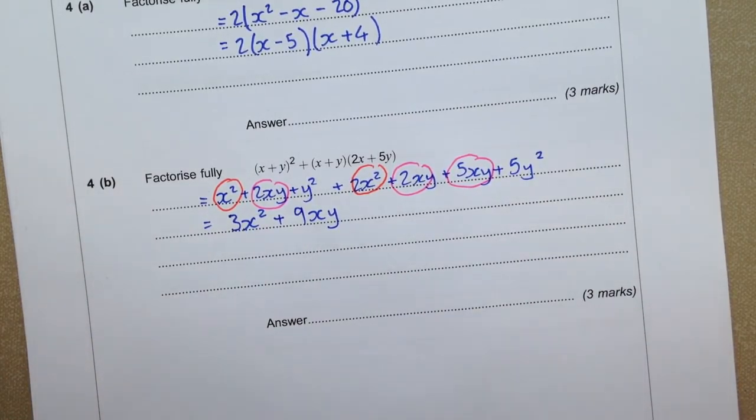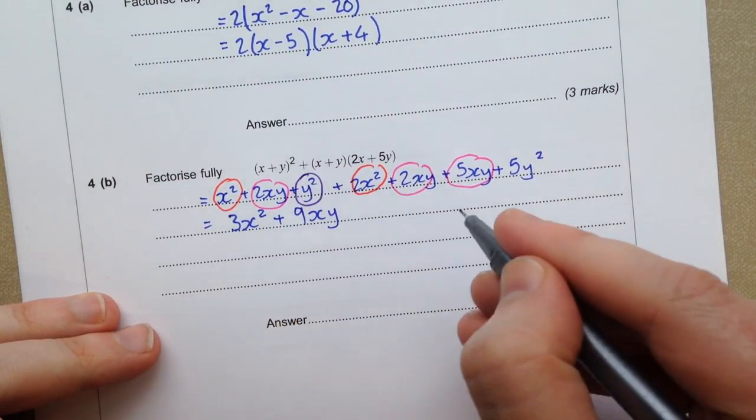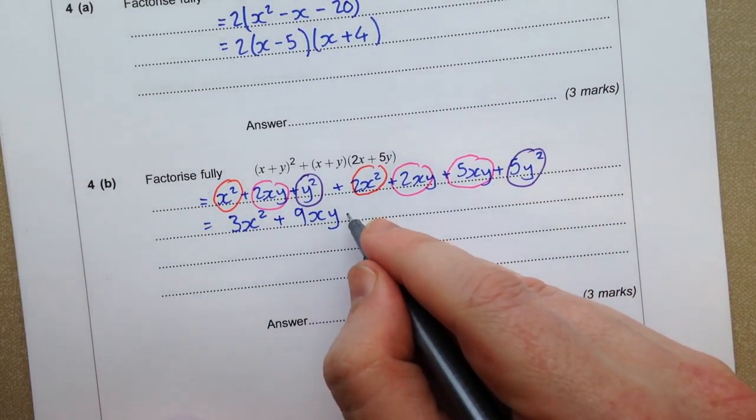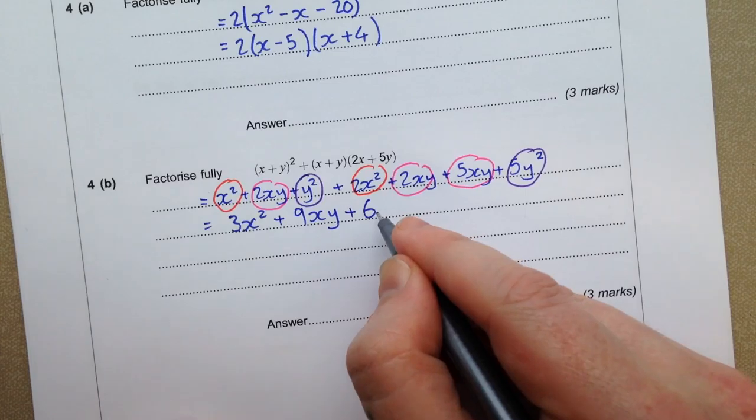And finally, we've got y squared and 5y squared. That is 6y squared.